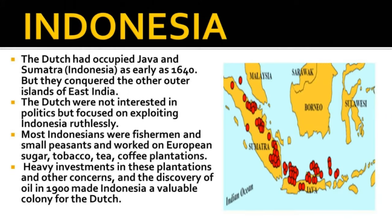Indonesia: The Dutch had occupied Java and Sumatra (Indonesia) as early as 1640, but they conquered the outer islands of the East Indies only in the second half of the 19th century. Initially, the Dutch were not interested in politics but focused on exploiting Indonesia ruthlessly. Most Indonesians were fishermen and small peasants who worked on European sugar, tobacco, tea, and coffee plantations. Heavy investment in plantations and the discovery of oil in 1900 made Indonesia a valuable colony for the Dutch.